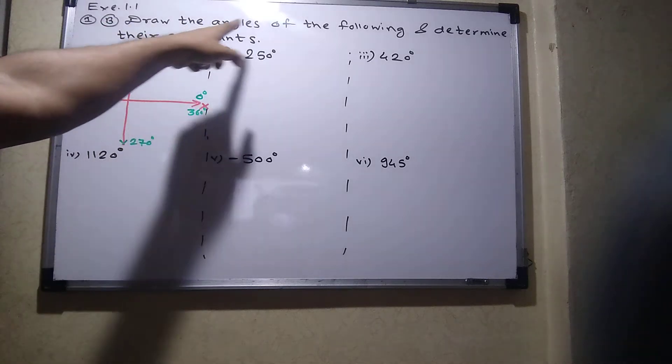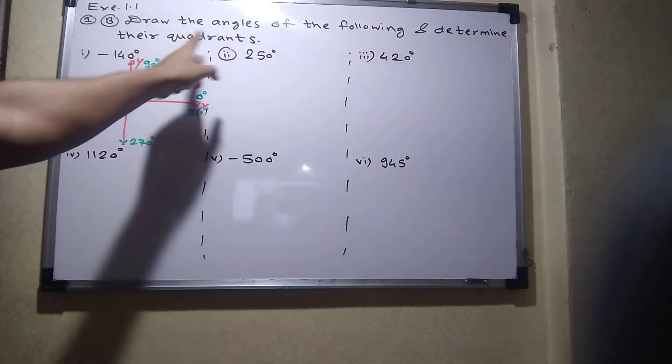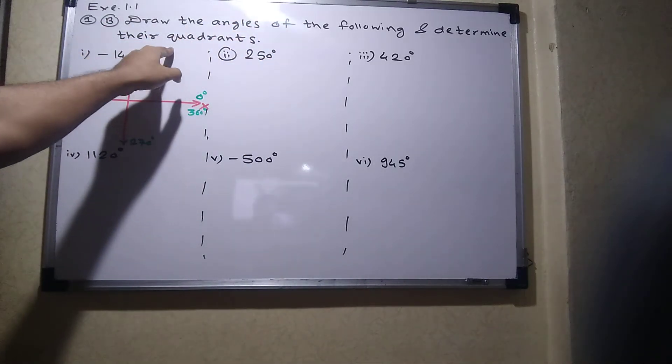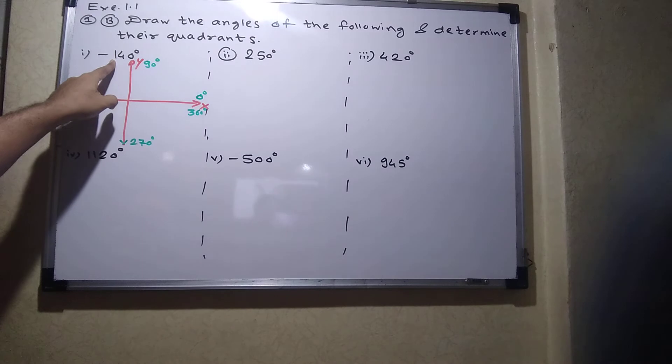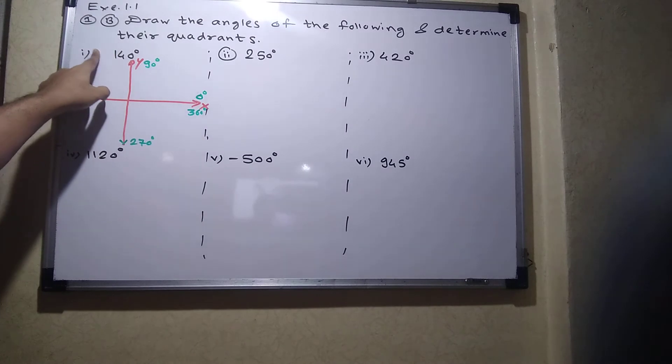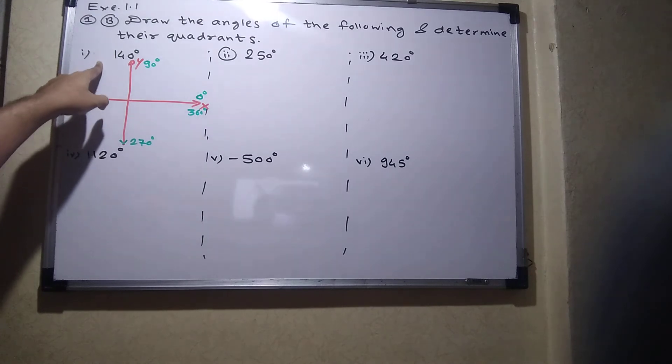The question is: draw the angles of the following and determine their quadrants. The first angle is plus 140 — actually, it is minus 140.